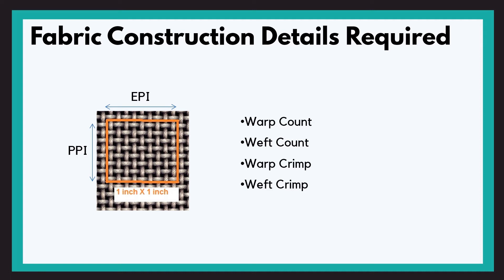Where is crimp? Basically, if I have one meter, the warp will be more than one meter because we have interlacement. To make the interlacement, we need extra warp and extra weft. So if I just want to consider it to be 1 meter, then my calculation will be wrong. We will consider the warp crimp and weft crimp also.